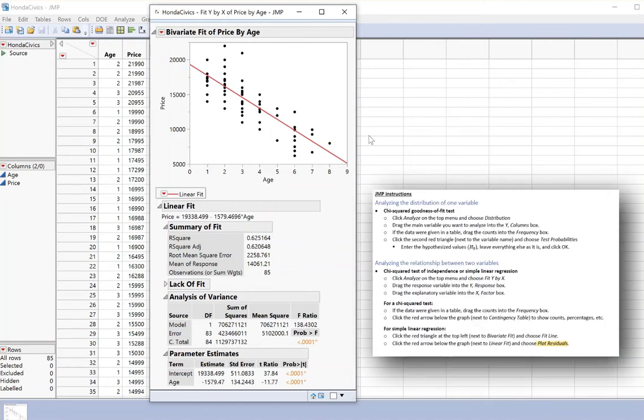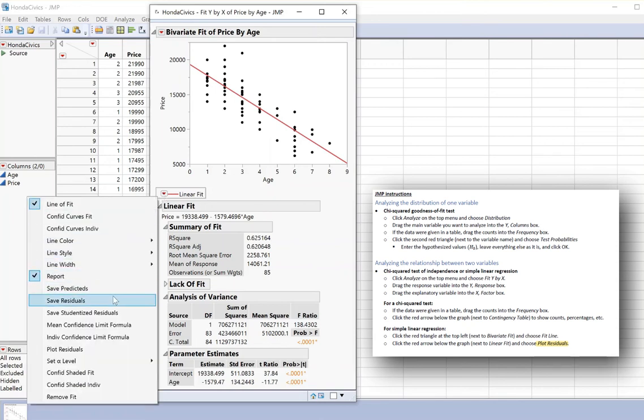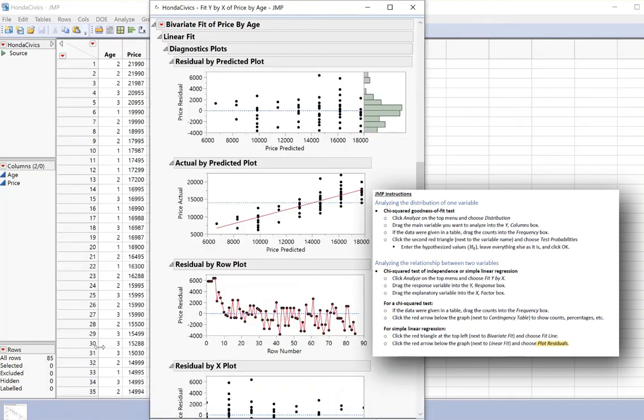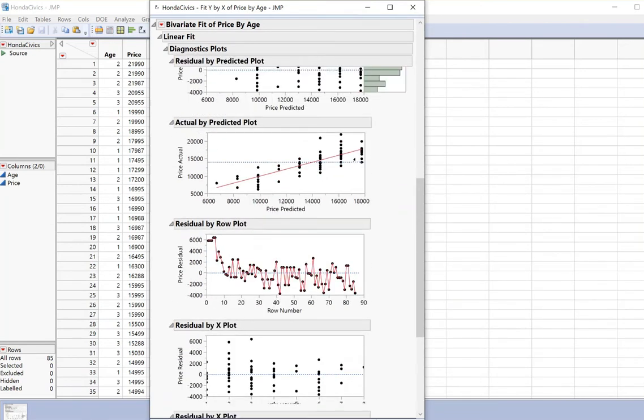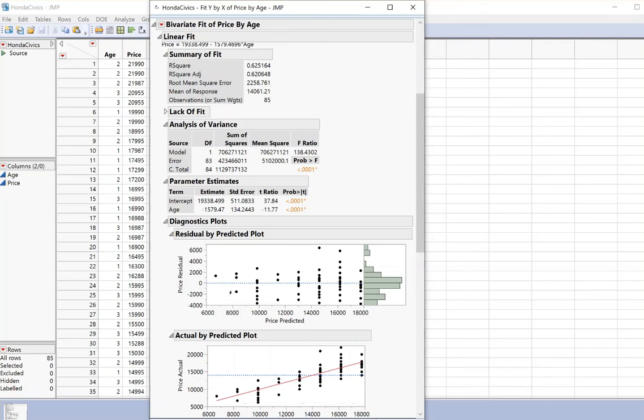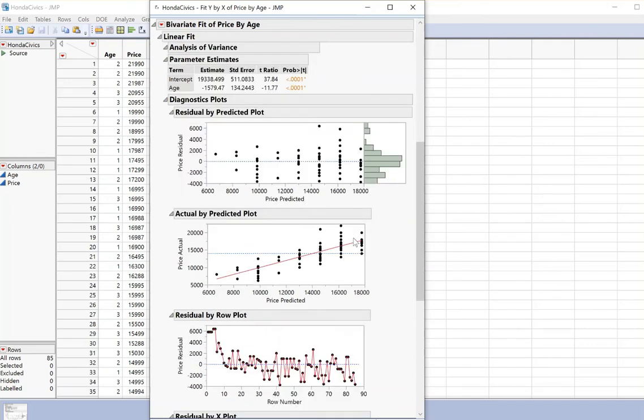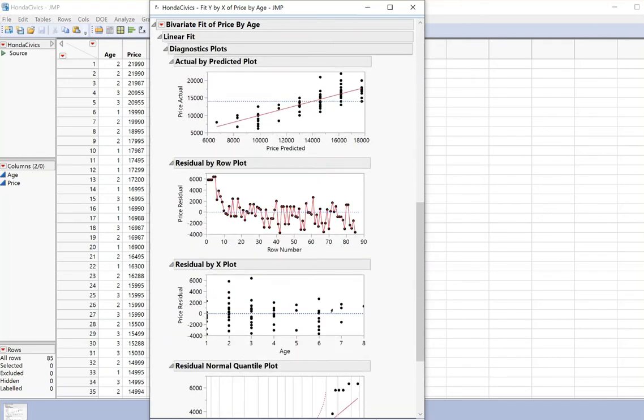So I'm going back to this Honda Civics data. I've already fit the regression model. I'm going to go down here where it says linear fit, and I'm going to choose plot residuals. And it gives me a bunch of different plots. The main ones that we're going to use are the residual by predicted plot here, and then a slightly different version of it, the residual by x plot.